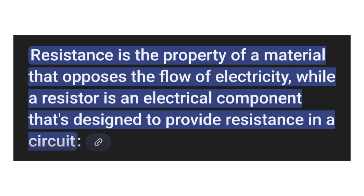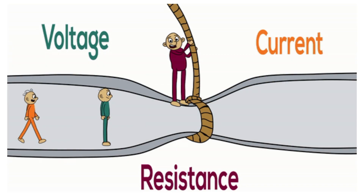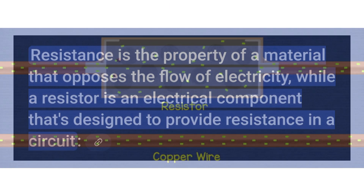In simple words, electrical resistance is the opposition that is offered to the flow of electric current through a conductor. Simply, we can say that it is the opposition offered to the flow of charge carriers inside a conductor or in a medium.